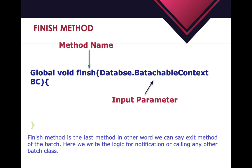The finish method is the last method of the Batch Apex, which we can call the exit method. We write exit logic here - like notifying the user that the batch has been successfully completed with or without errors. You can also call another Batch Apex from the finish method, or send information about how many records were processed, how many were successful, and how many failed - all in an email to the user.